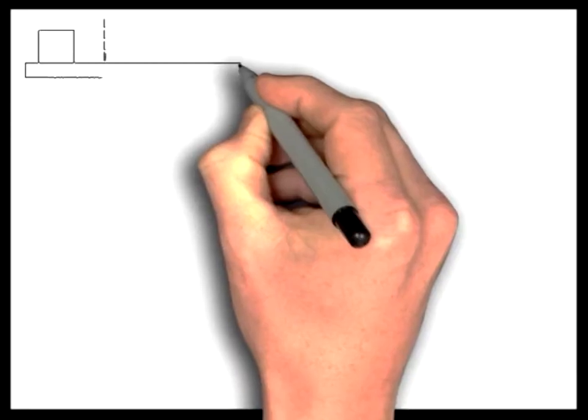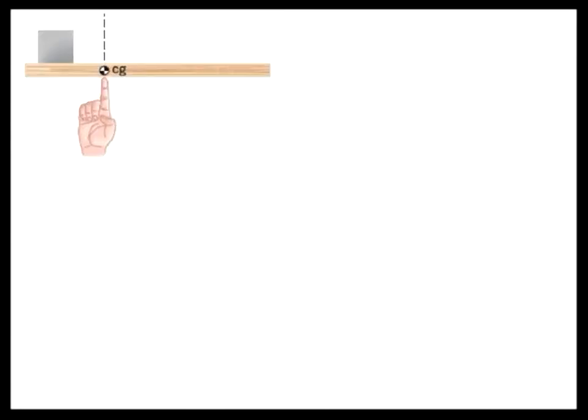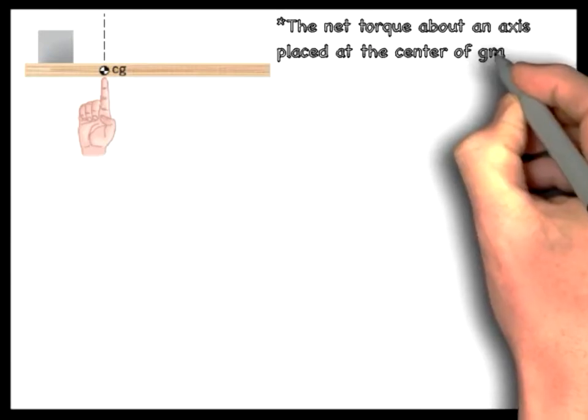Once the location of the center of gravity of a system is determined, it can be balanced by placing a support beneath this location. Therefore, the center of gravity represents the location where, if an axis is placed, the net torque about that axis will be zero.